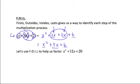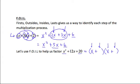Now that we've got a handle on the FOIL method for multiplying, let's use it to factor x squared plus 12x plus 20. We know we need to start with two sets of parentheses for two binomials. The signs in both binomials have to be positive because every term in the trinomial is positive. The Firsts need to multiply to give us x squared, so we need x times x. It would be easy if we only had to consider the last term — we could write 20 and 1 — but we also have to get the middle term right.